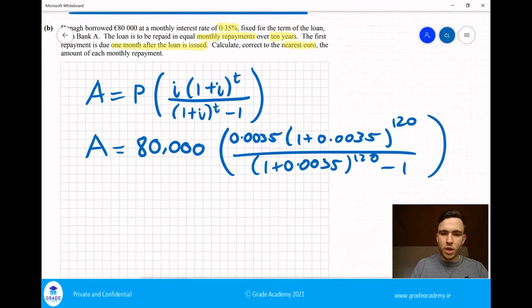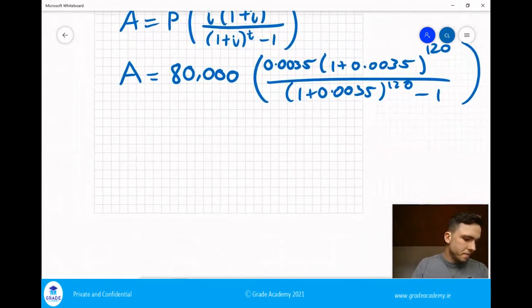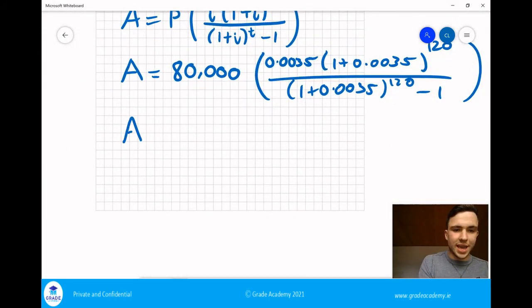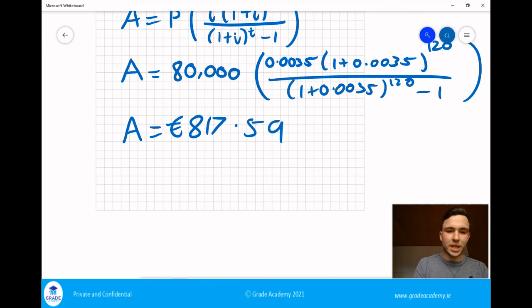And all we have to do now is throw that into our calculator. We're going to get A is equal to 817 euro and 59 cents. So if we round that to the nearest euro, that is going to be 818 euro.